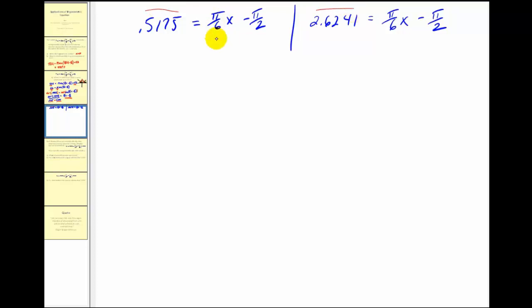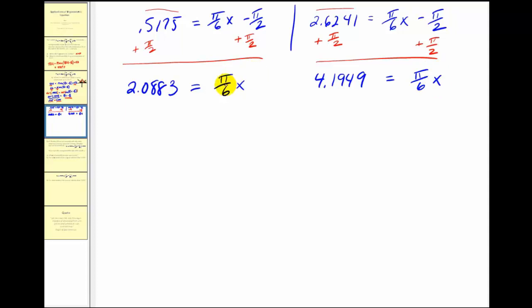In order to solve this for x, we'll add pi over two to both sides. Let's do the same thing on this side. This will be approximately two point zero eight eight three equals pi over six x. And on this side, we're going to have four point one nine four nine equals pi over six x. Now we'll multiply by the reciprocal or multiply by six over pi. So this simplifies nicely. We're left with x is approximately equal to three point nine eight eight four. And over here, we'll have x is approximately eight point zero one one seven.